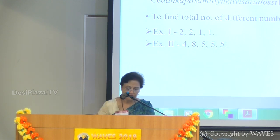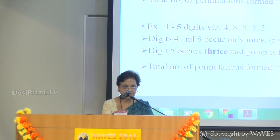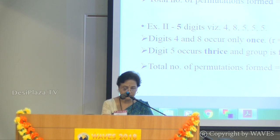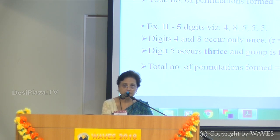In the first example there are 4 digits. Digit 2 occurs twice, forming group 1 with R = 2. Digit 1 also occurs twice, forming group 2 with S = 2. The total number of permutations is N! / (R! × S!) = 4! / (2! × 2!) = 6. In the second example there are 5 digits. 4 and 8 occur only once (R = 1, S = 1), while digit 5 occurs three times forming a group with T = 3. According to the formula: 5! / (1! × 1! × 3!) = 20.